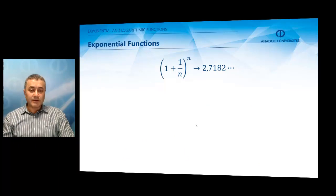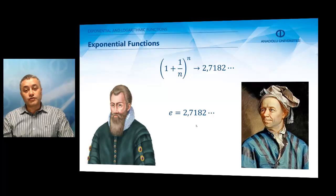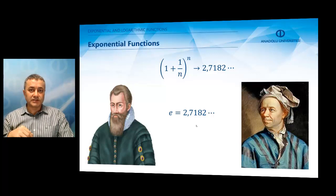This number (1 + 1/n)^n is approximately 2.7182 when n is very large, actually when n tends to infinity. This number was first used by Napier in his work around the 1600s, but he used the letter B. It's Leonard Euler who introduced this number into mathematics and called this number e, which is a very important irrational number in mathematics.